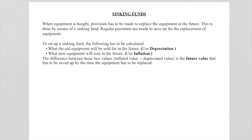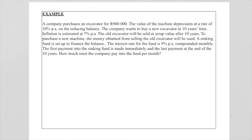Let's now discuss a problem. The problem looks quite impressive because there is a lot of information, but my advice is always to do it one step at a time. A company purchases an excavator for 900,000 rand. The value of the machine depreciates at a rate of 10% per annum on the reducing balance. The company wants to buy a new excavator in 10 years time — that is very important, 10 years time.